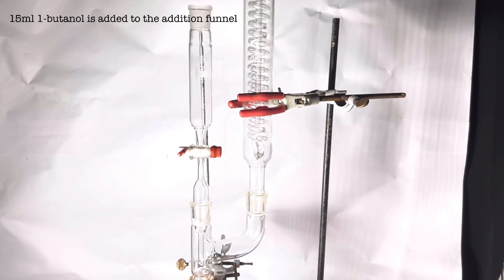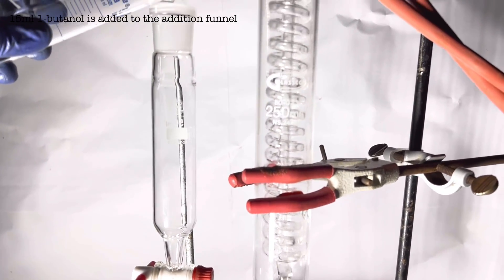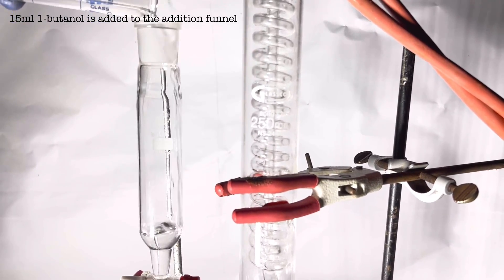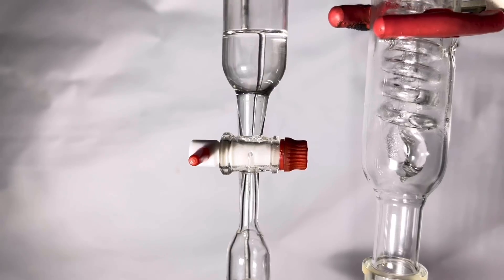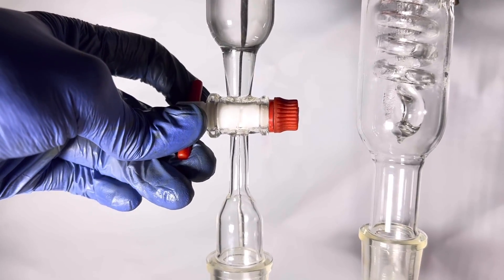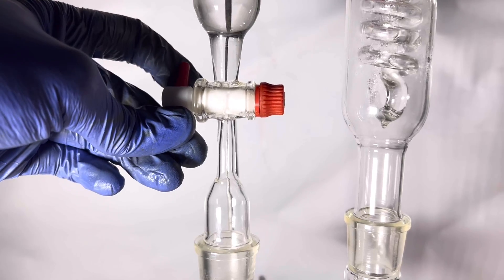15 milliliters of one butanol or n-butanol was added to the addition funnel. Make sure that the stopcock is closed before adding the alcohol. Slowly turn the knob of the stopcock and allow the alcohol to fall in the chromic acid solution drop by drop.